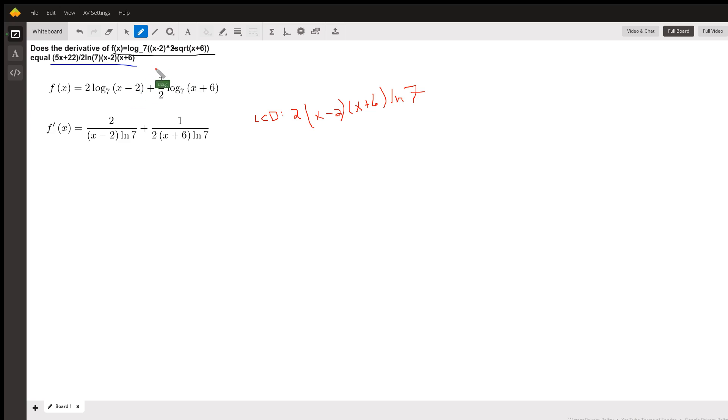This is a product of two, the log of a product. So we'll split that into the sum of two logs. And at the same time, we'll use the power property of logarithms and bring these exponents down front.